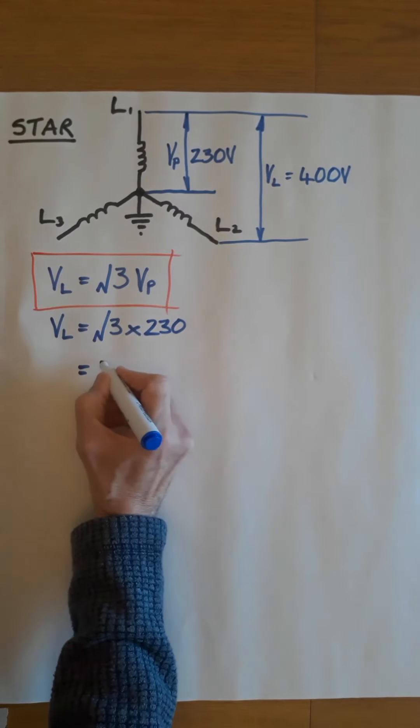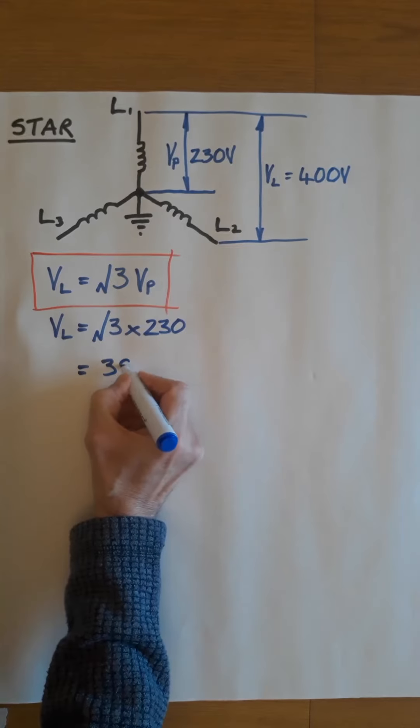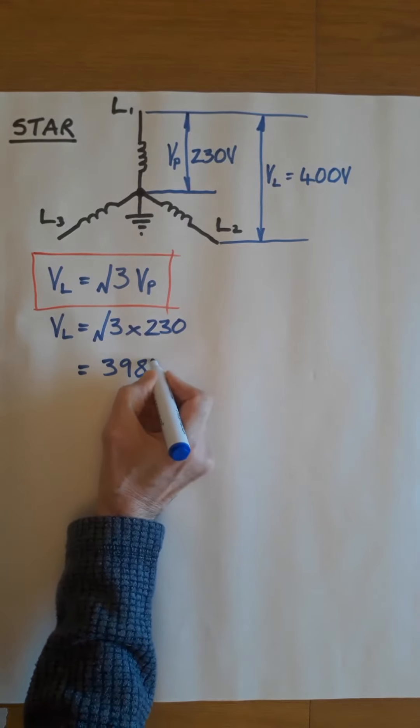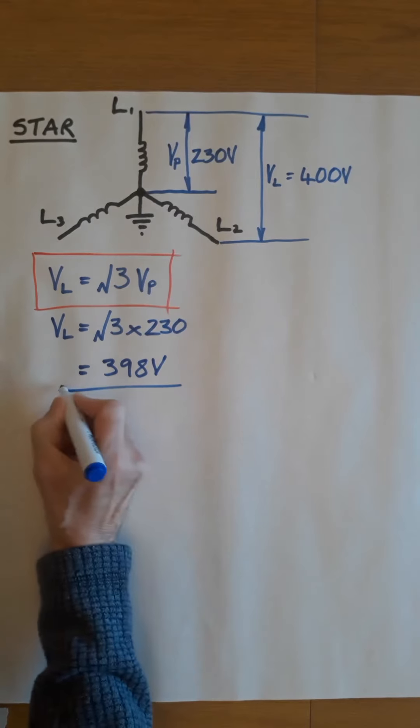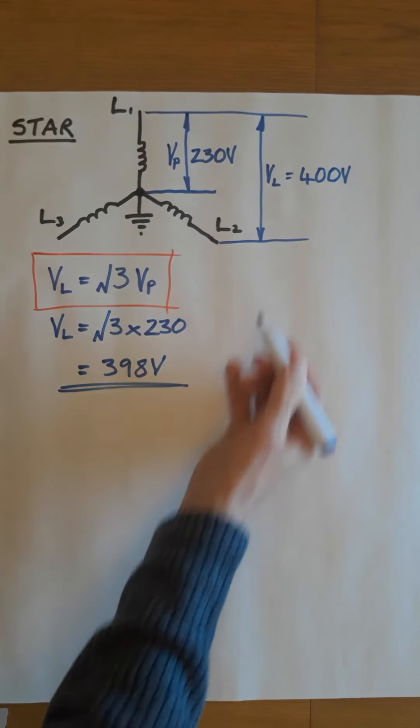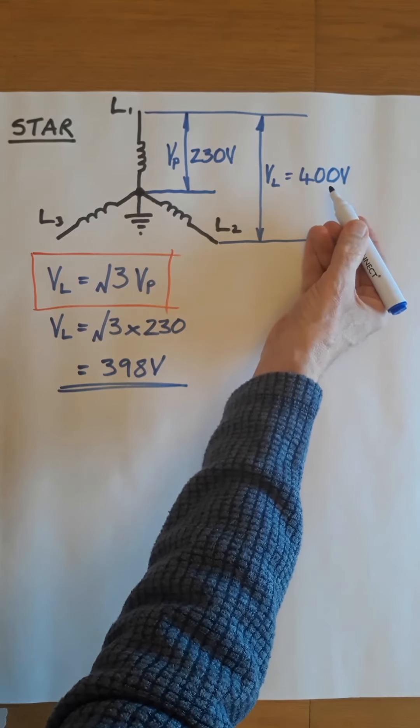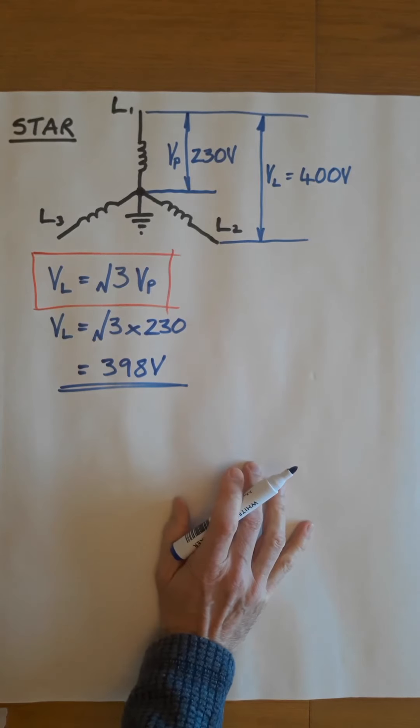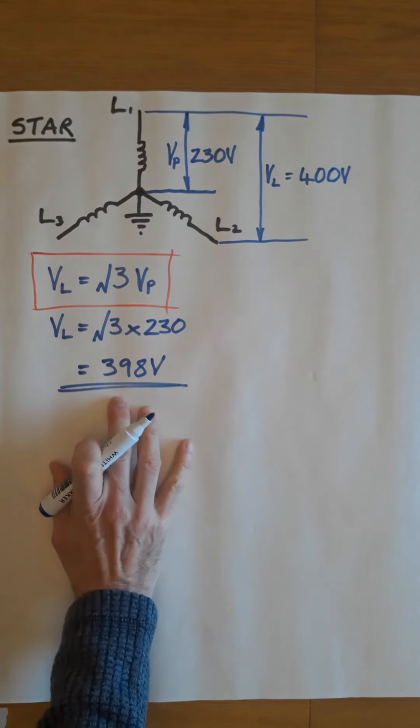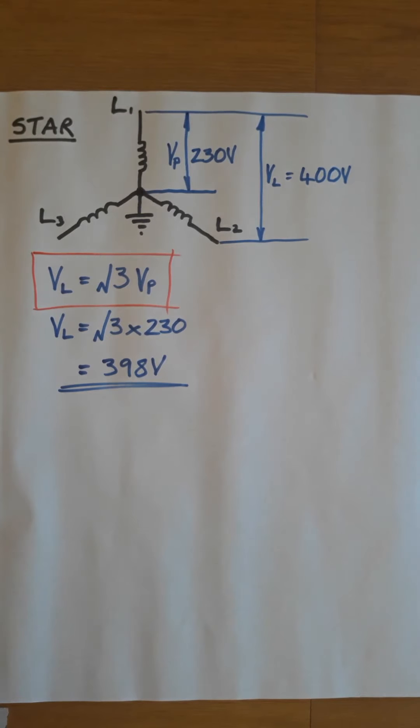You'll find that comes to 398 volts. As I said a moment ago, these are nominal voltages. Broadly speaking, it's the figure we expect, but they do vary a little. So that gives us basically 400 volts.